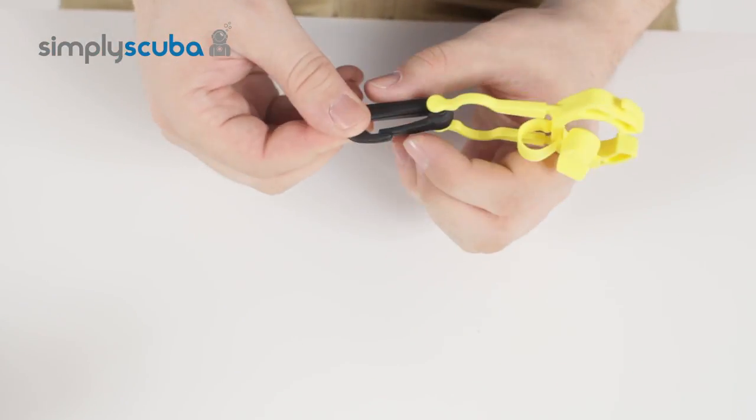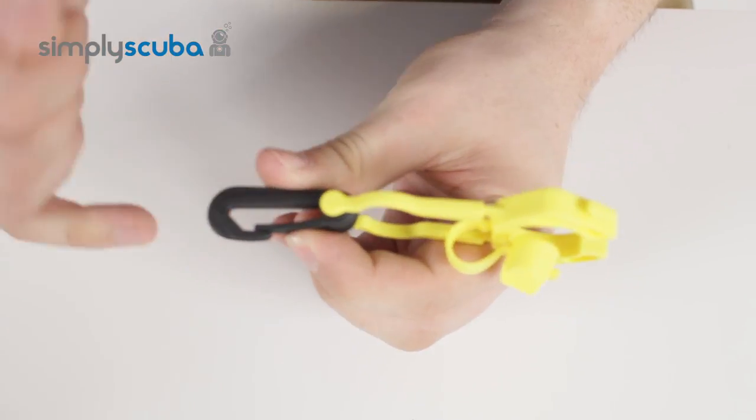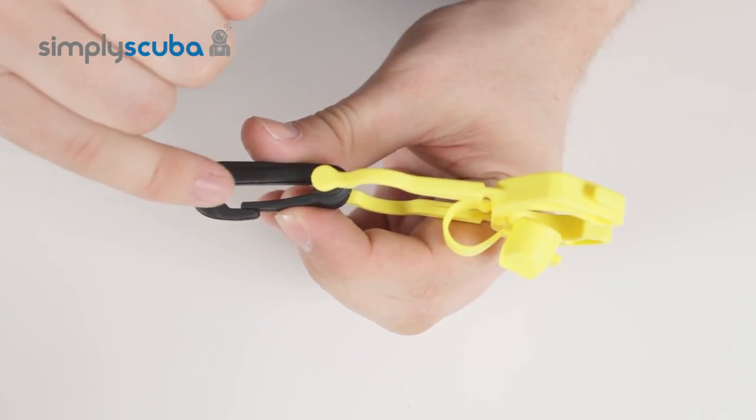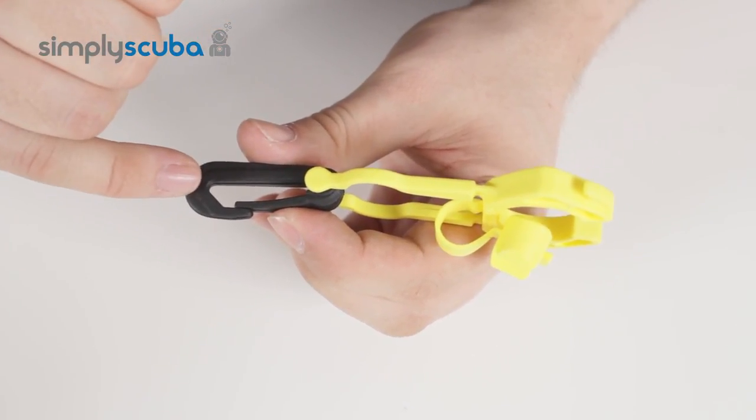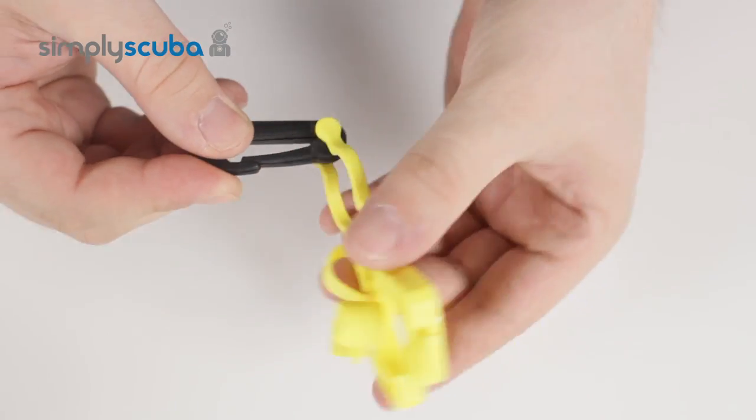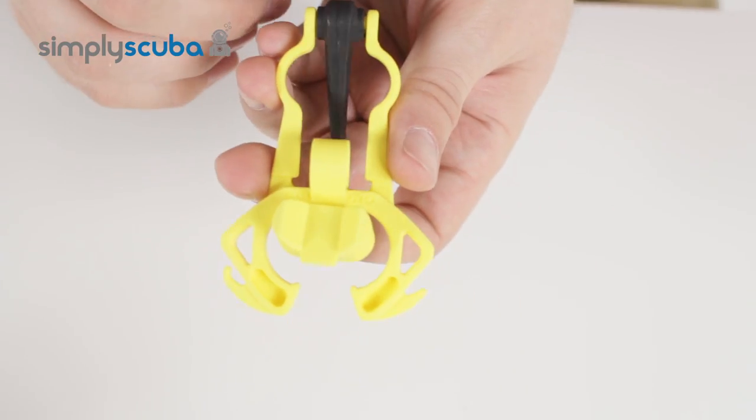So at the top of it, you have a nice plastic gate sort of clip. So you can clip this onto any D-ring on your BCD and then your second stage will hinge on that.